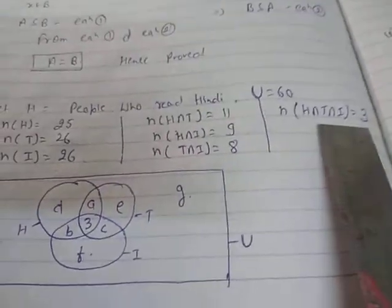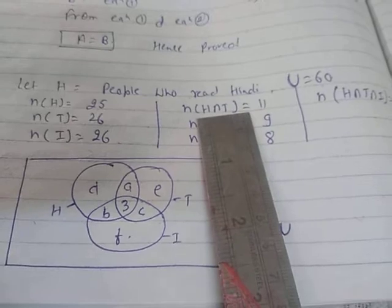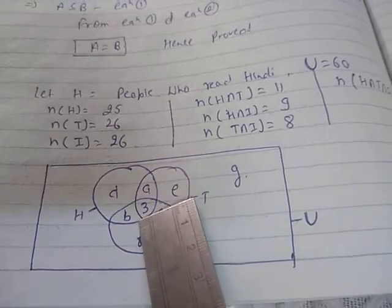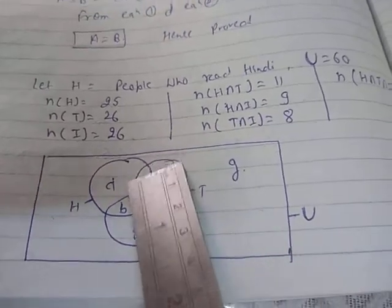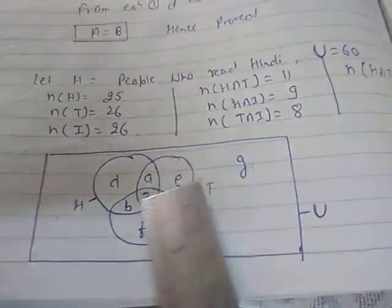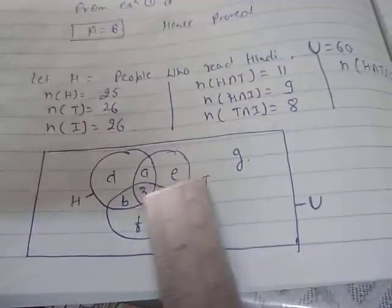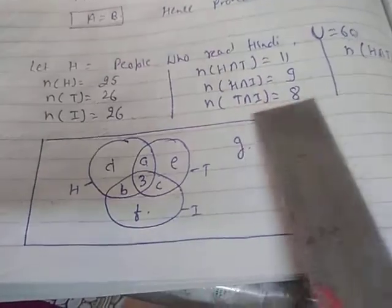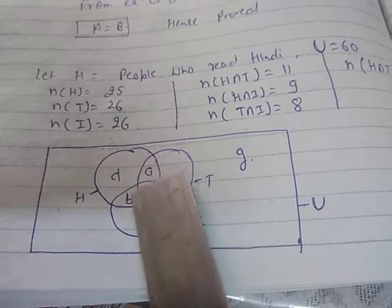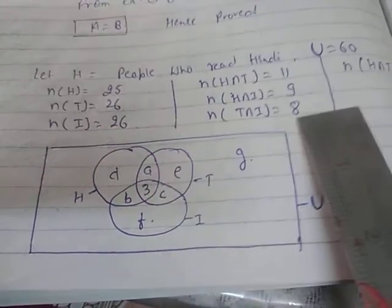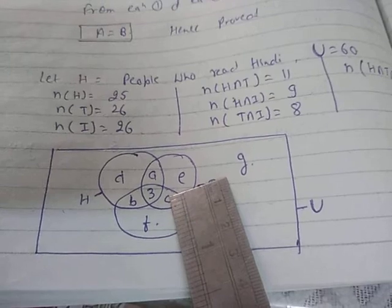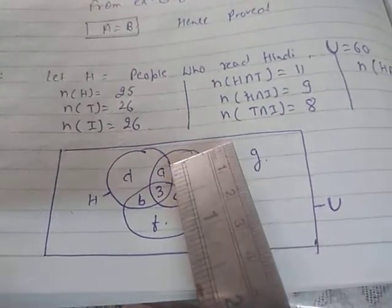Since H intersection T is 11, that region equals a plus 3. With a plus 3 equal to 11, you can find a. Similarly, b plus 3 equals H intersection I, which is 9, so b can be found. T intersection I gives c plus 3 equal to 8, so c can also be found.